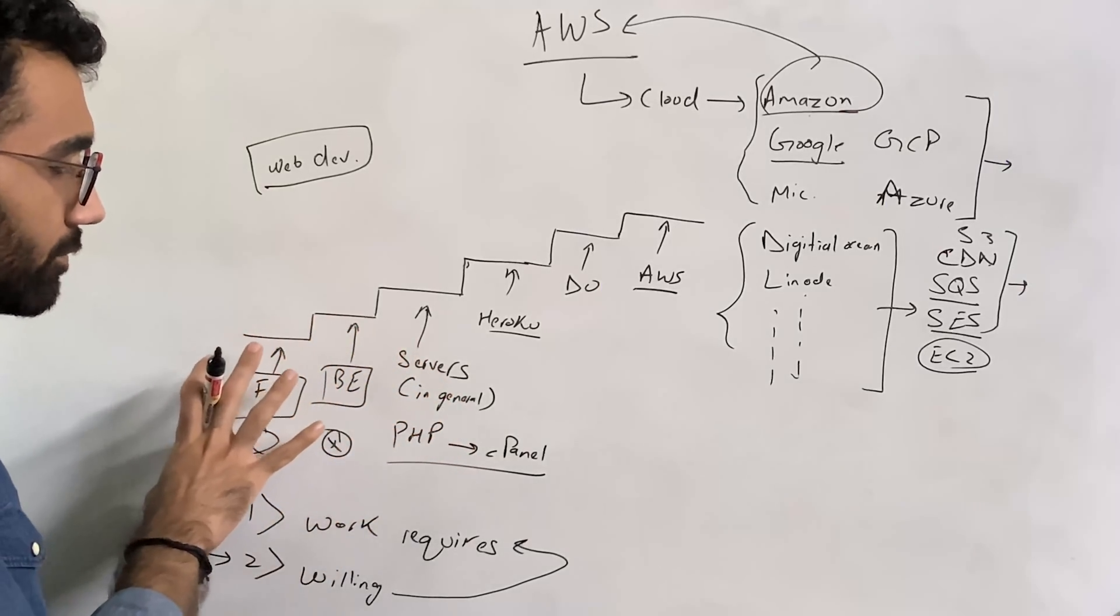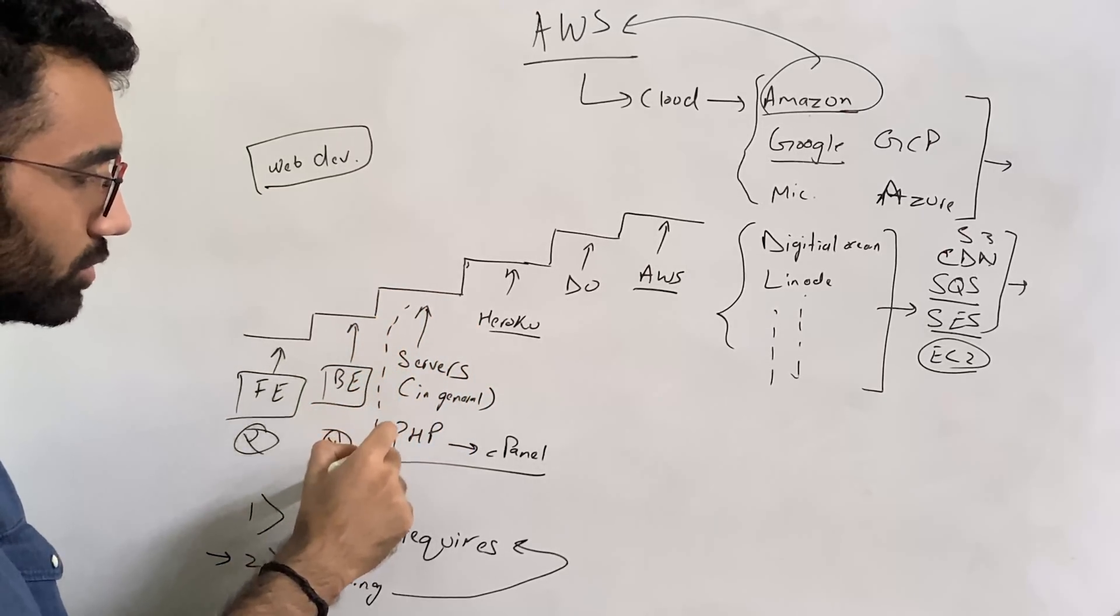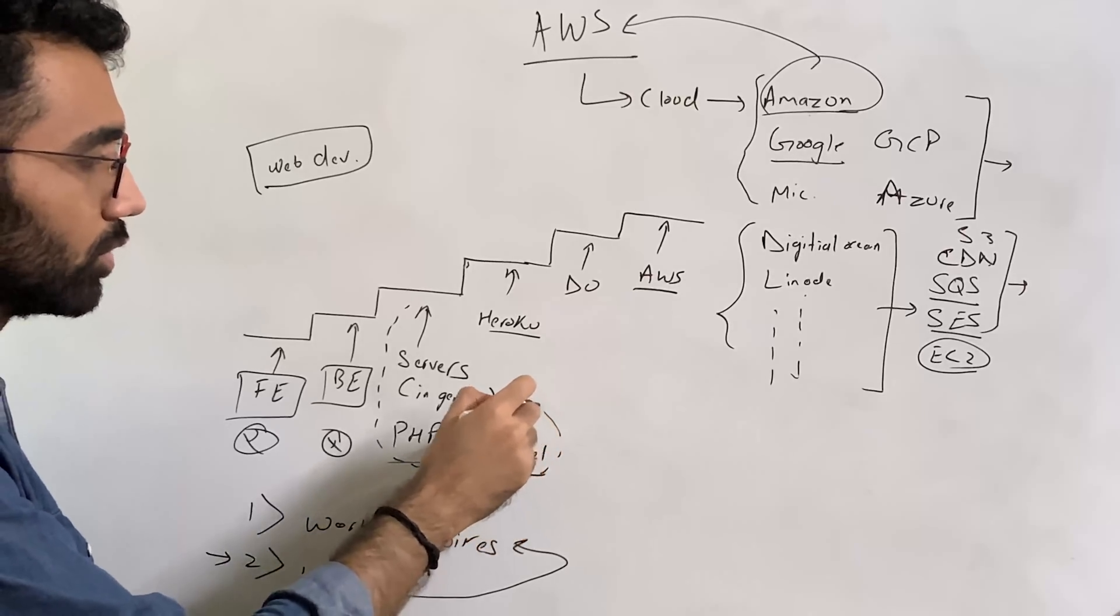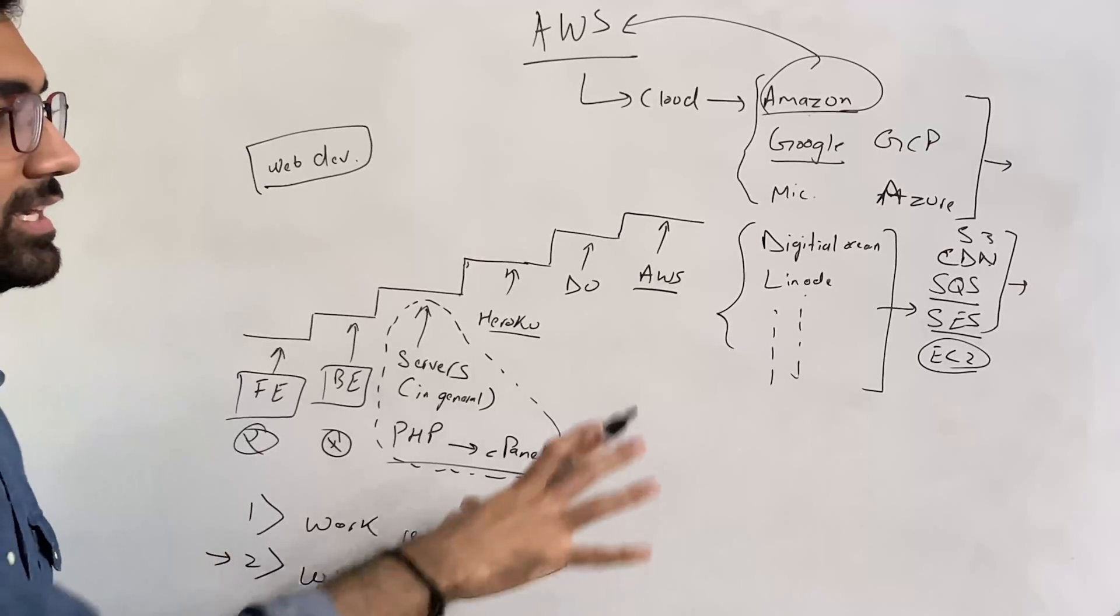So in general you should start with front-end, back-end, move to servers in general, try to understand about them, learn a bit about networking stack and DNS and CNAME records and this and that because you're going to be handling a lot of stuff in AWS anyway